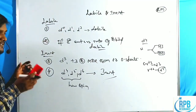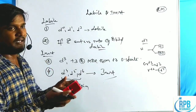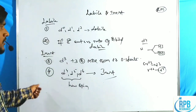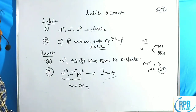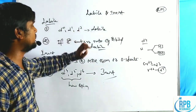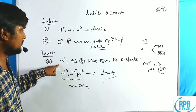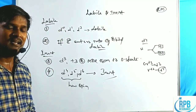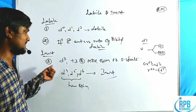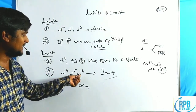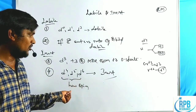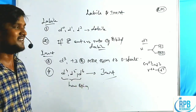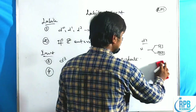These four rules are enough to show the lability or inertness of complex compounds — especially for octahedral complexes only. First: D0, D1, D2 are labile. D3 configuration with +3 or more than +3 is inert; if less than +3, then labile. D4, D5, D6 low spin is inert — meaning high spin are labile. D3, D4, D5, D6 high spin configurations are labile.